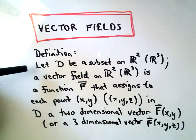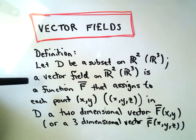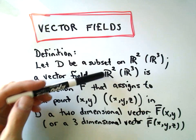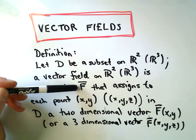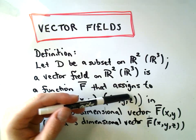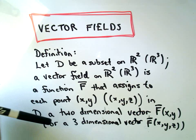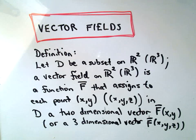Let D be a subset on R2, or possibly R3. A vector field on R2, or equivalent to R3, is going to be a vector function that assigns to each point, either (x,y) or equivalently (x,y,z), a two-dimensional vector or equivalently a three-dimensional vector.